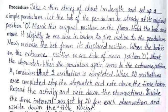The procedure is: take a thin string of about 1 meter length and set up a simple pendulum. Let the bob of the pendulum be steady at its original position O, and mark this original position on the floor. Hold the bob and move it slightly to one side in order to give motion to the pendulum.